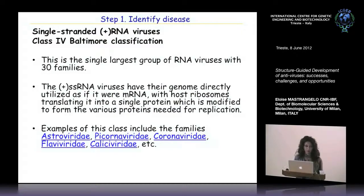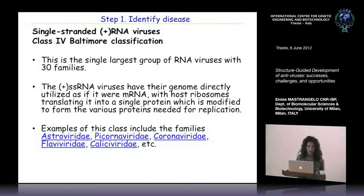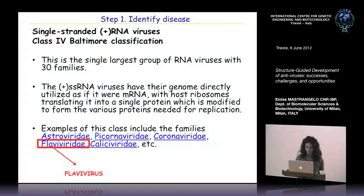Examples of these families include Coronaviridae, famous in recent years because of the SARS virus, and Flaviviridae, famous for the hepatitis C virus and Caliciviridae, famous for the gastroenteritis virus. We focus mainly on Flaviviridae, in particular the genus Flavivirus, and on Caliciviridae, in particular the genus Norovirus.